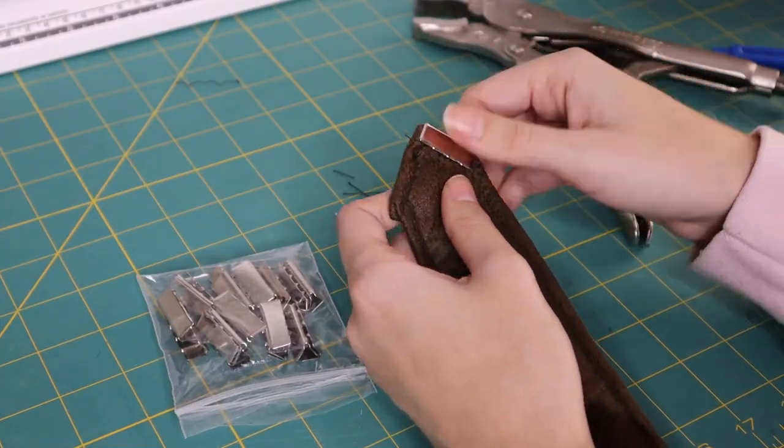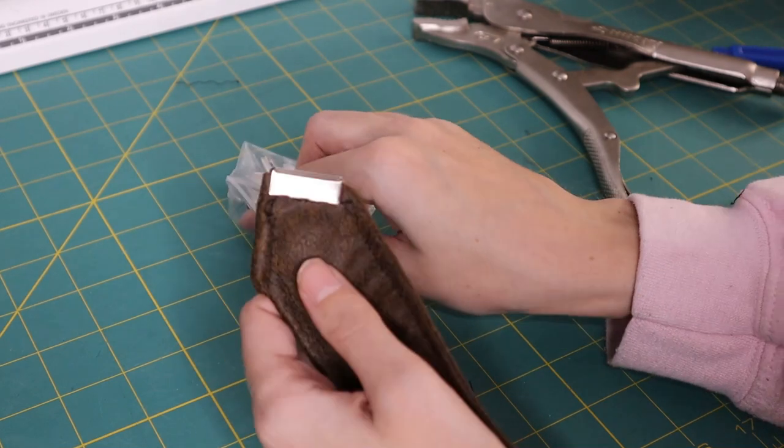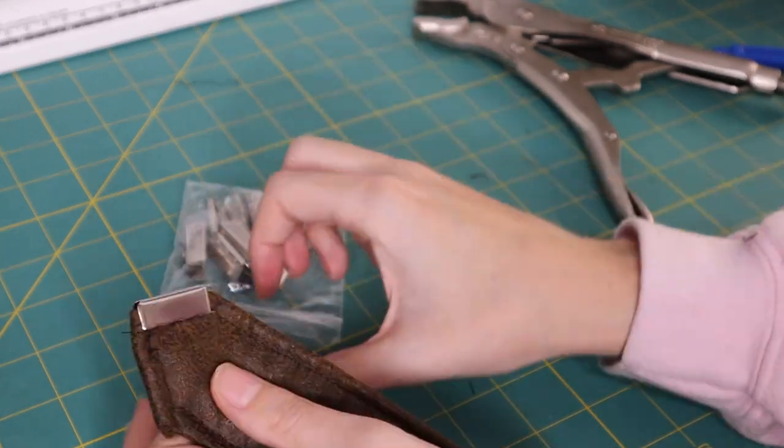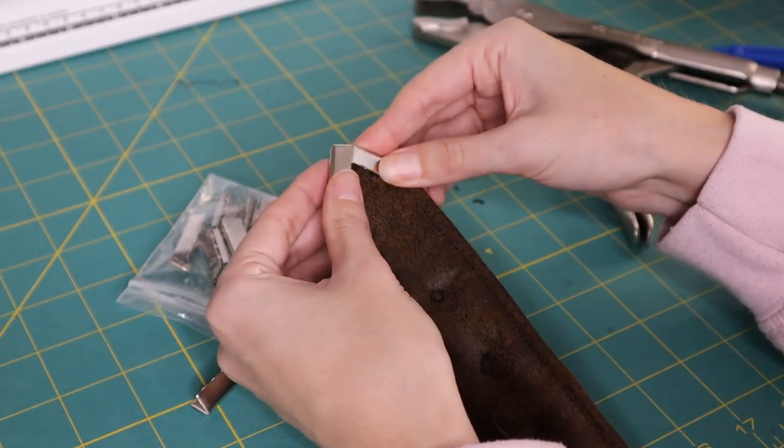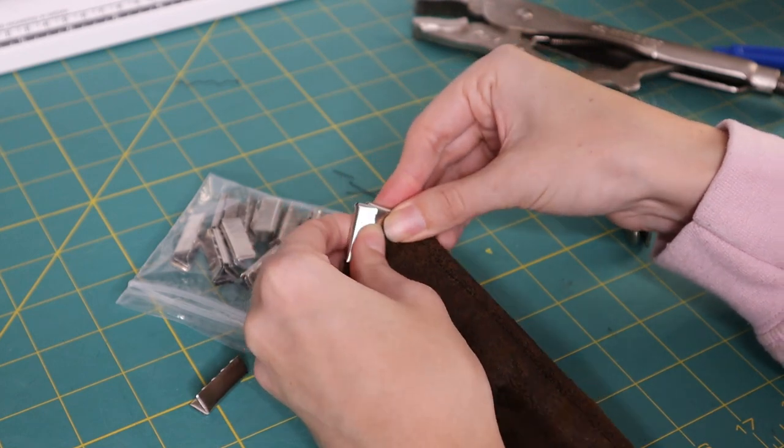And I'm also going to add belt tips to the end. This is what I meant when I said that I didn't have to be really clean with my edges here. Because I'm just going to be covering them up with metal.